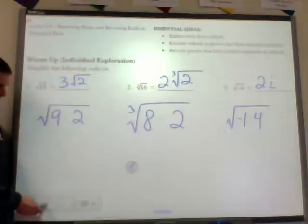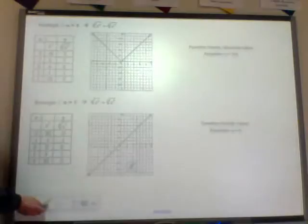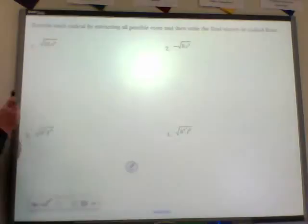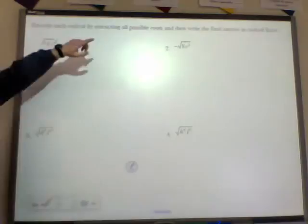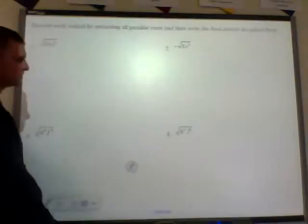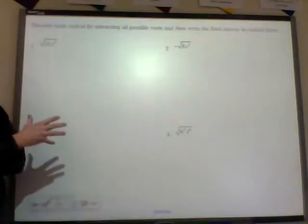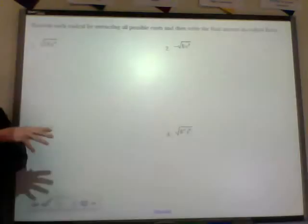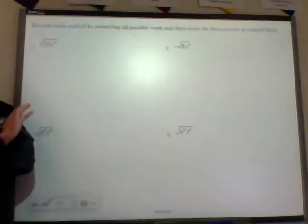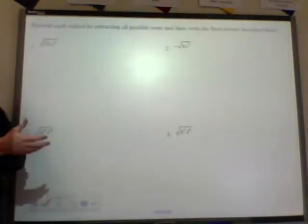I'm going to go about this a little differently. Anything I'm skipping through, I have worked out and posted online, so you're welcome to check those out. Jump to the page in your notes where you have these four problems: number one, the square root of 16x to the sixth; number two, the negative square root of 8v cubed; number three, the square root of d cubed f to the fourth; and number four, the square root of h to the fourth j to the sixth. Make an attempt on each, stop the video, try those four problems, then turn the video back on.